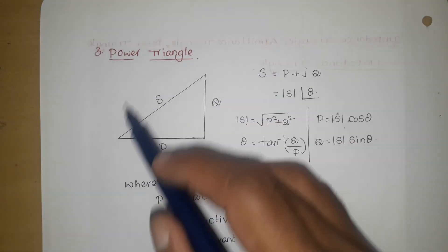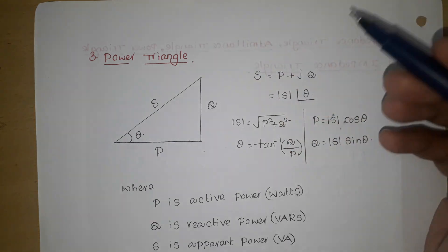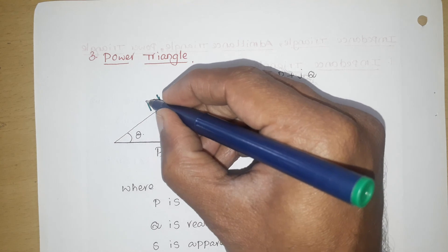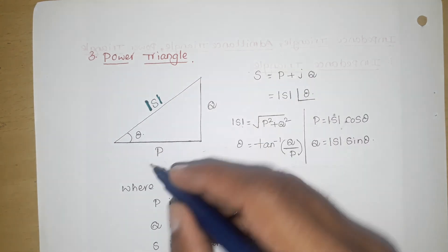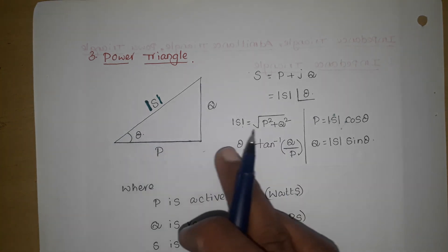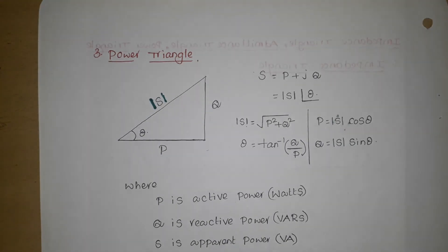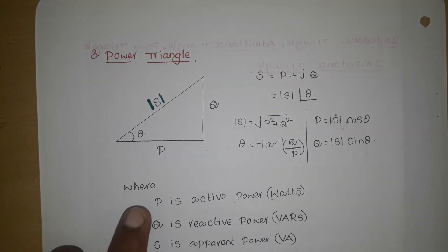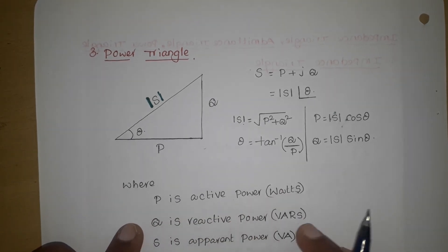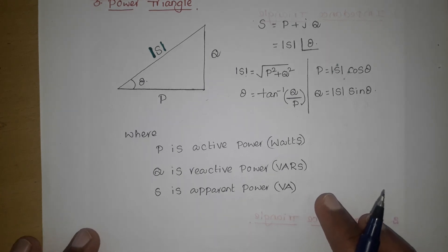If we represent this in the form of a diagram: P is a real term and Q is an imaginary term, and mod S is the resultant of P and Q. Theta is the angle made by mod S with the reference. This is the power triangle, which is also a right angle triangle. Unit of P is watts where P is active power, Q is reactive power with unit vars, and S is apparent power with unit volt amperes.